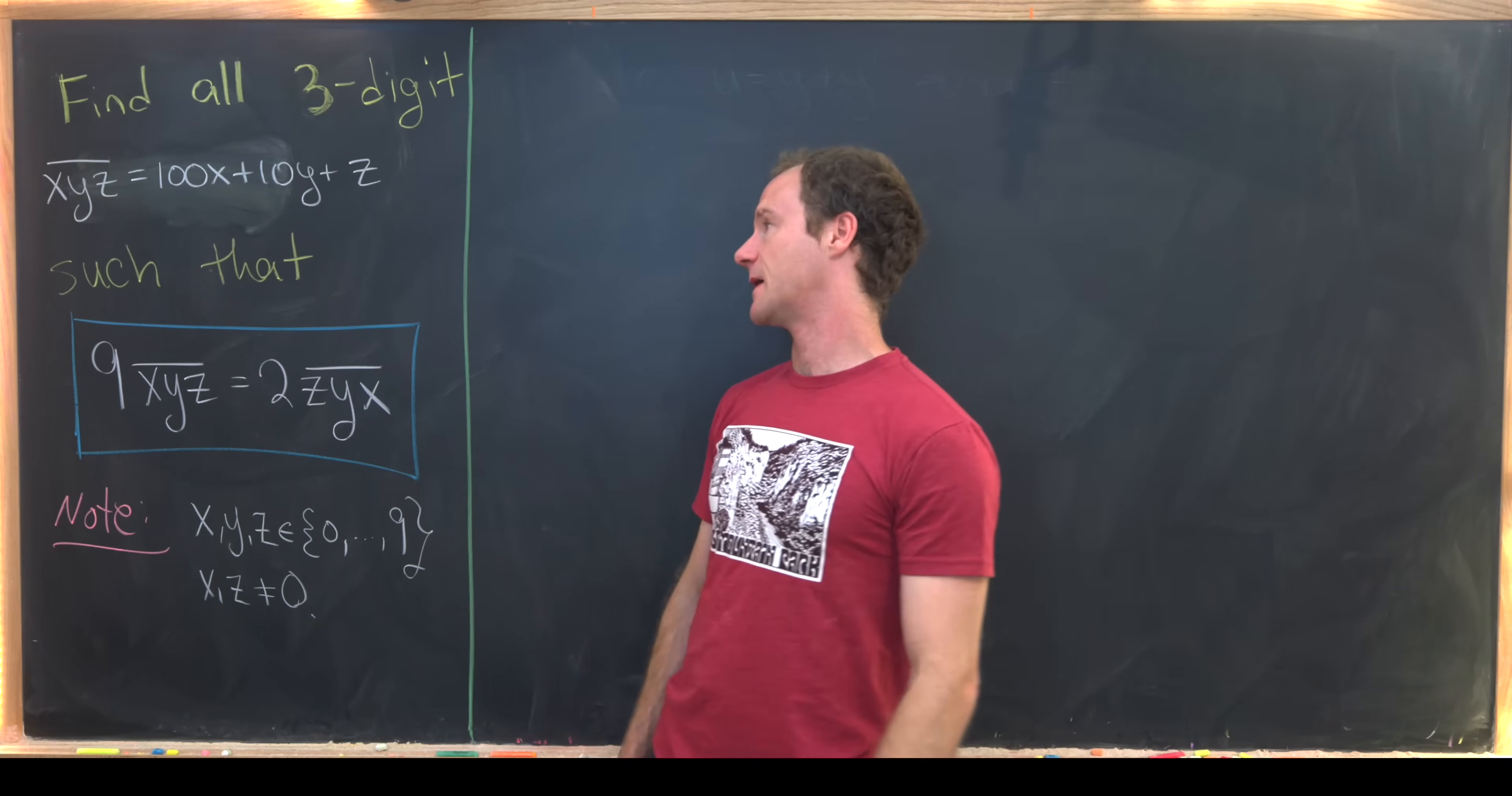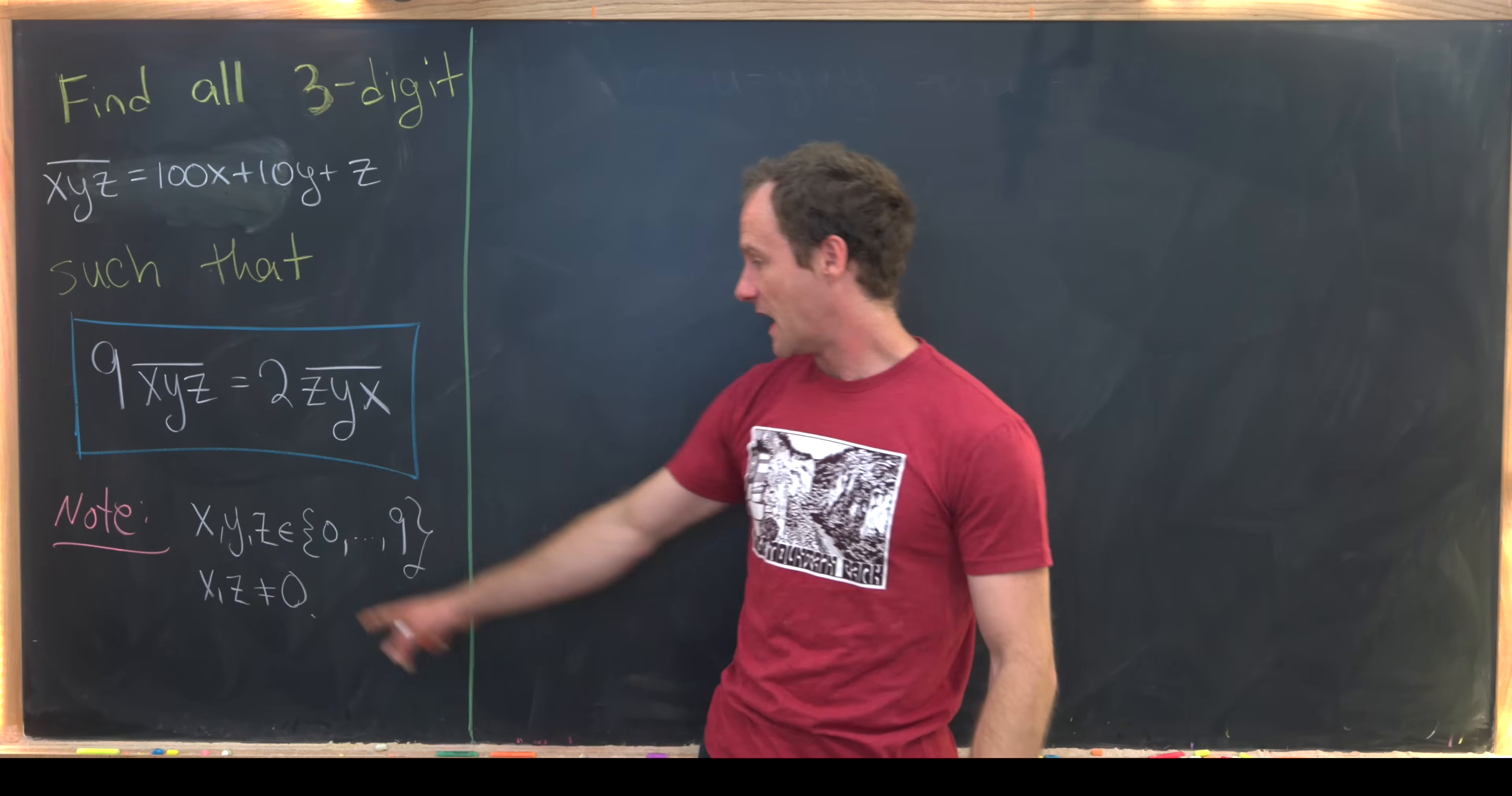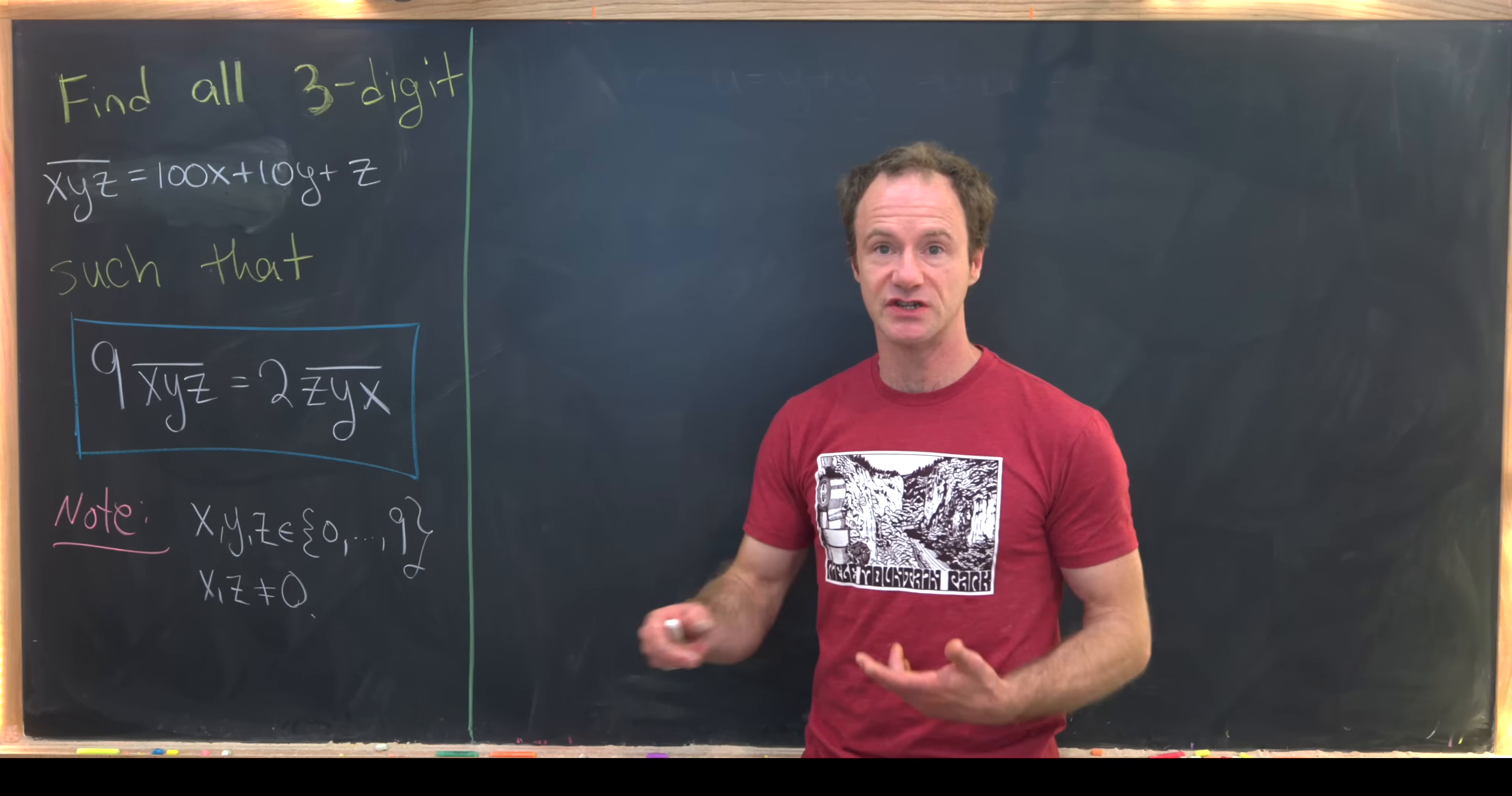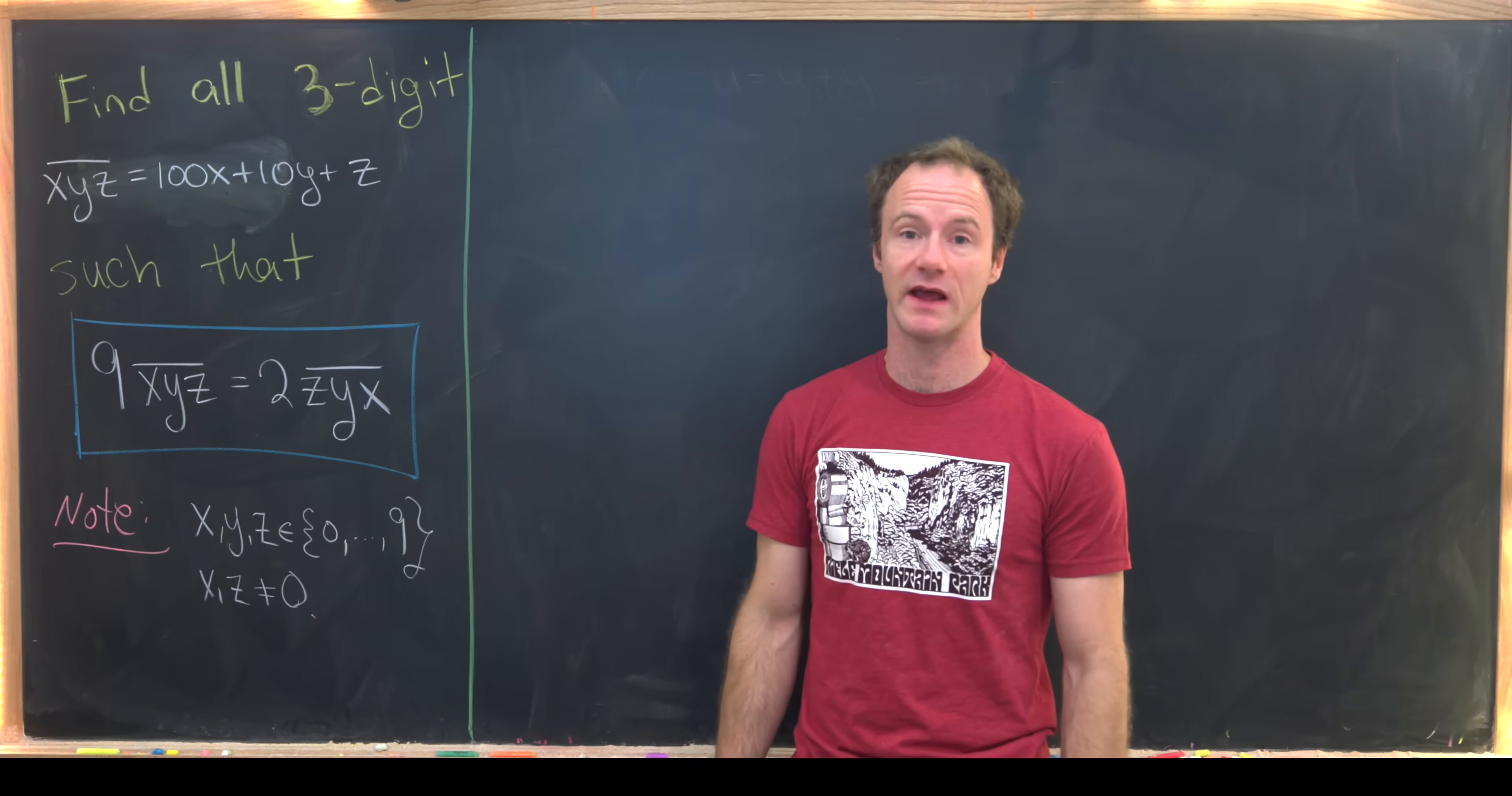What we mean by that is 100x plus 10y plus z, and x, y, and z come from the set 0 to 9 because the digits of a number written in decimal notation can only be between 0 and 9.